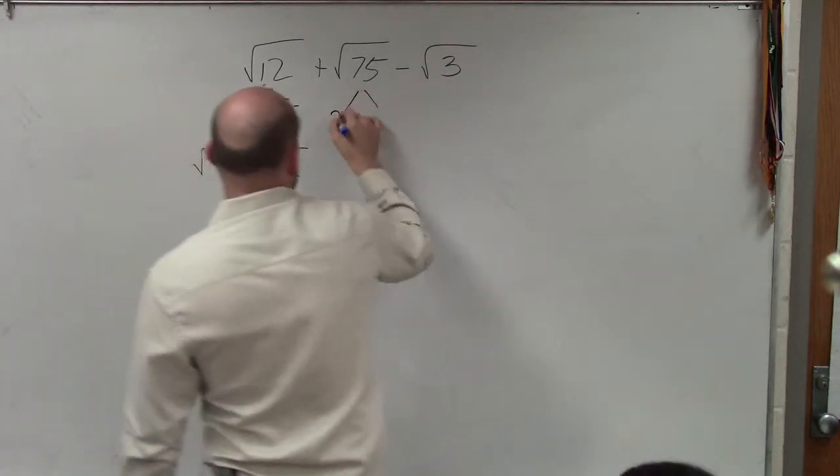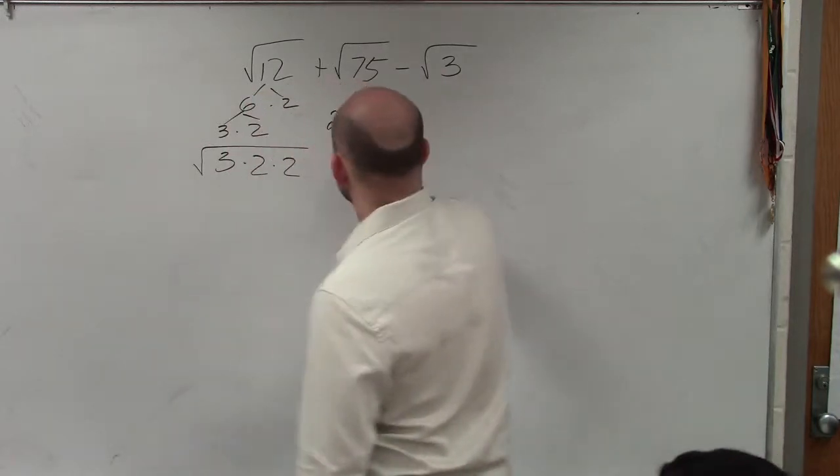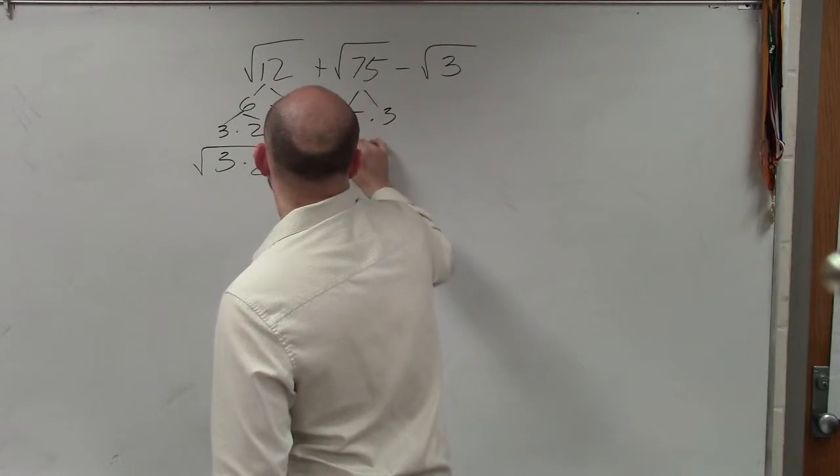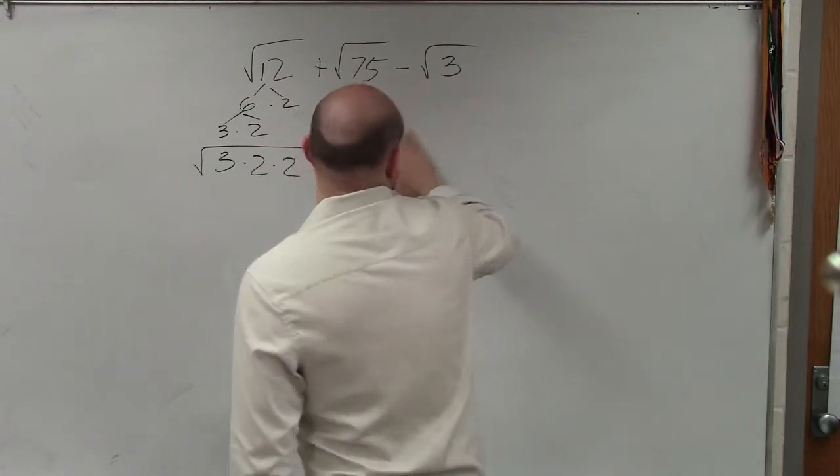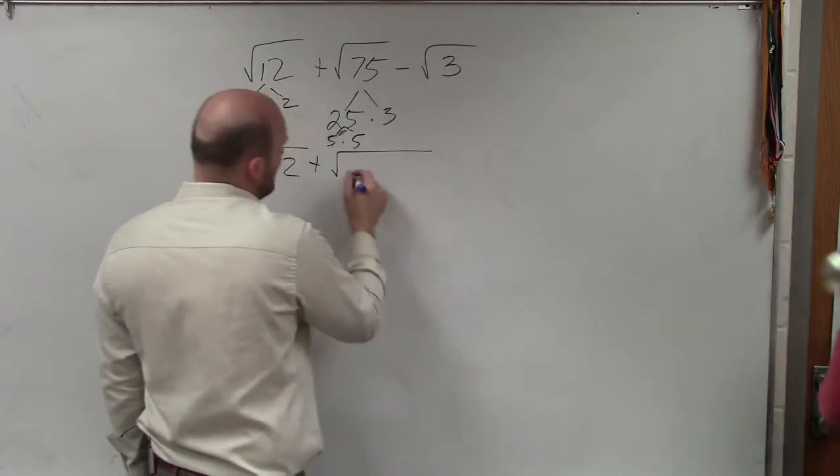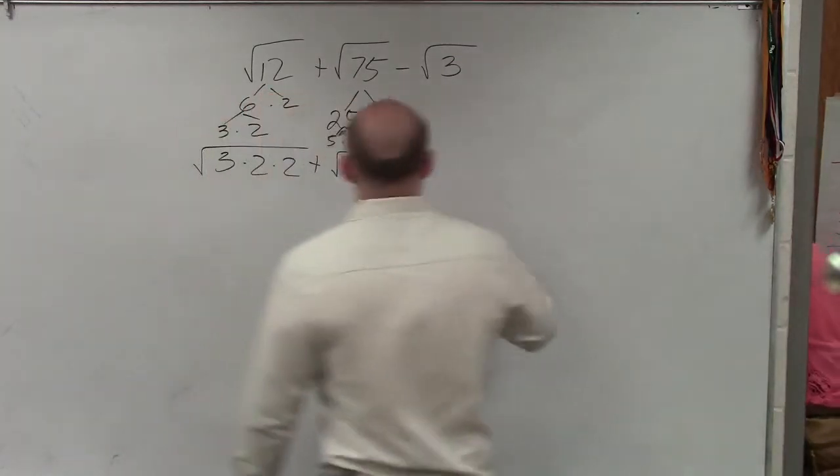Square root of 75, I could say 25 times 3, and then that can be broken down into 5 times 5 times 3. So therefore, I can rewrite that as plus the square root of 5 times 5 times 3, OK?